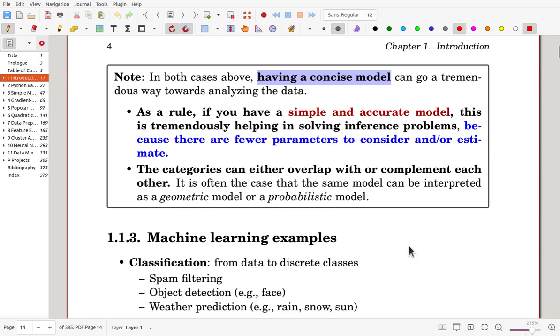Here, having a concise model is very beneficial. It is a tremendous way toward analyzing the data. The rule is that you have to find the model as simple as possible, but must be accurate. So, that simple and accurate model is desired. In this case, you can get fewer parameters to train or to estimate, so that it is more efficient. And, here,